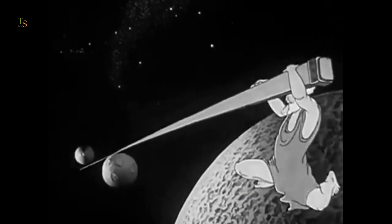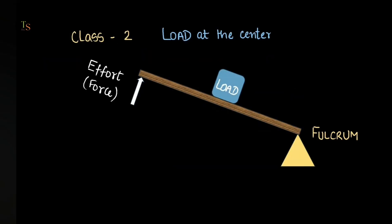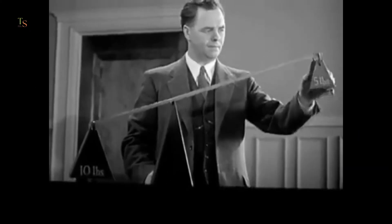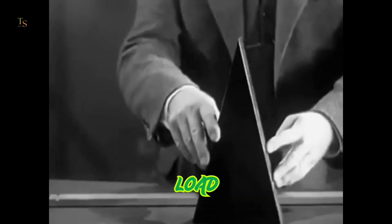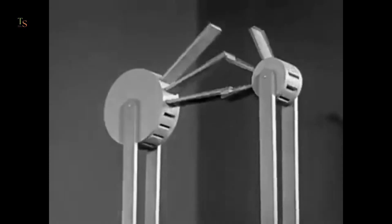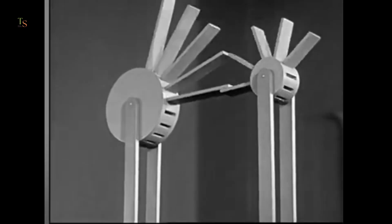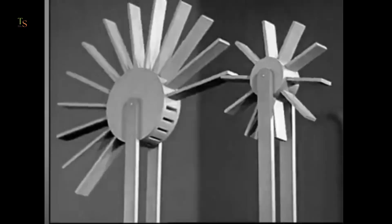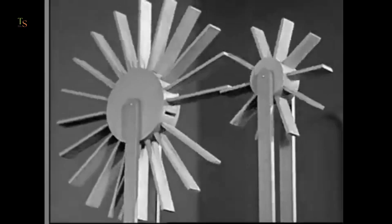A lever is a simple machine that helps us do more work using less force. There are three types of levers: Class 1, Class 2, and Class 3. They all have three main parts: load, effort, and fulcrum. When engineers attached a lever to a wheel, they got a mechanism that moved up and down. But what they needed was continuous motion, and that's when the idea of gears was born.